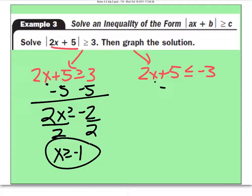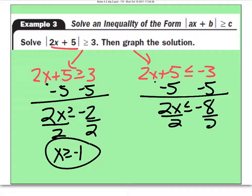And the second one, again, to get x by itself, I'm going to minus the 5. So I get 2x is less than or equal to negative 8. To get rid of multiply 2, I divide. x is less than or equal to negative 4.